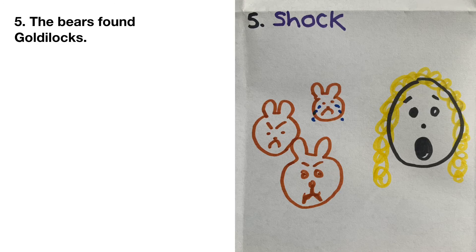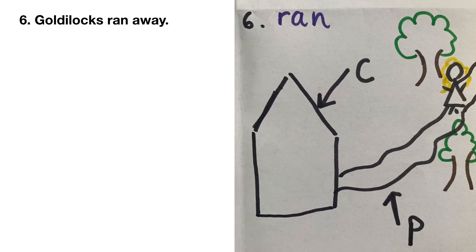What did she do then? Turn and tell your grown-up or your teddy. Then Goldilocks ran as fast as she could out of the cottage and into the forest, and the bears never saw her again. In the final box of my story map, I have written 'ran' because Goldilocks ran, and I have labelled the cottage with a K.